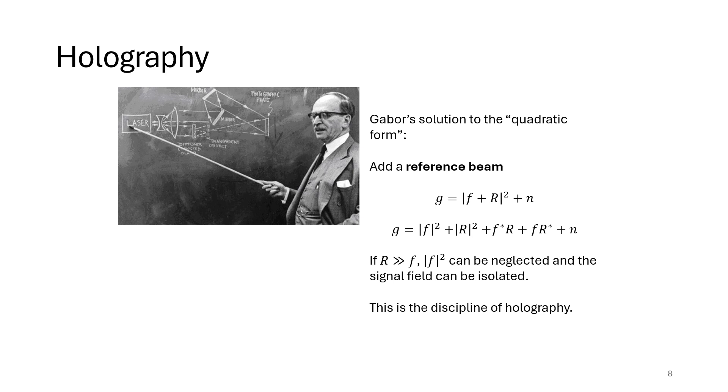So today we're talking about holography. Here you see Dr. Gabor explaining holography, including a photographic plate on which the object is observed in combination with the reference. The strategy here for solving the quadratic form problem is to linearize it by adding this reference beam. So we have the unknown field distribution f and we add a reference beam r.